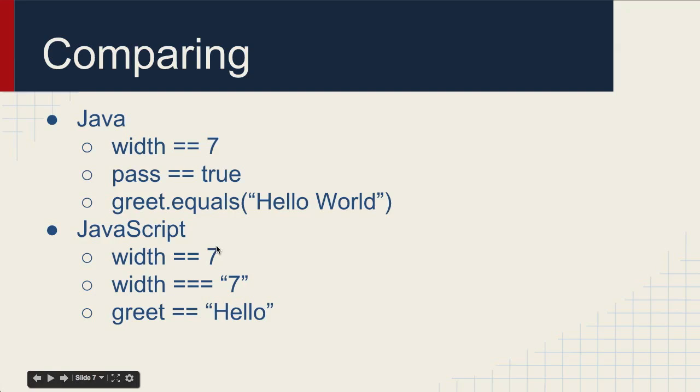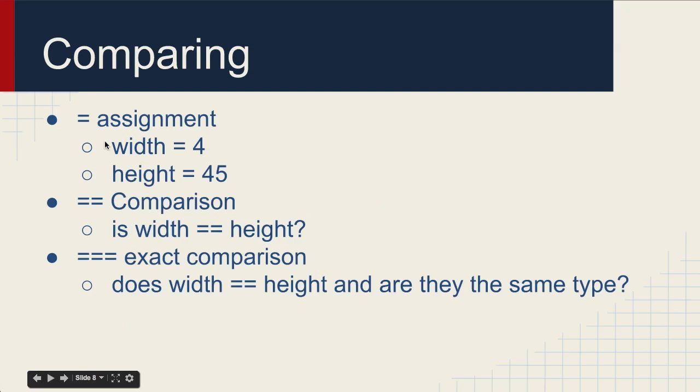Like say you wanted to compare two numbers, two integers. If it had a character 7, this would return false that these were not equal. So the single equal sign is used to assign things. This would assign the value of 4 to width. This would assign the value of 45 to height. The equal sign is for assignment. The double equal sign is for comparison - is width equal to height? The triple equal is a JavaScript thing and it's exact comparison - does width equal height and are they both the same type, are they both integers?